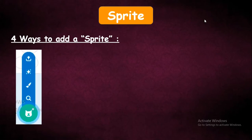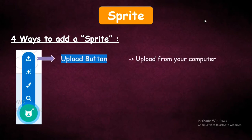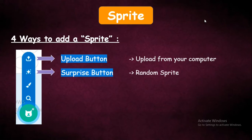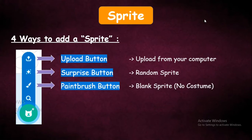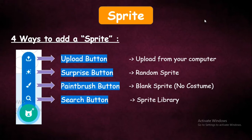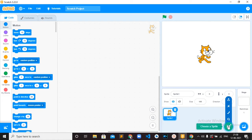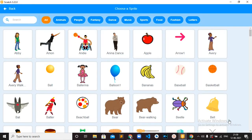There will be a bar, and in this bar you can find four options. Those are: Upload Button — you can upload a Sprite from your computer; Surprise Button — when you use this button, it will randomly give you a Sprite; Paintbrush Button — it will give you a blank Sprite without any costume; and the Search Button — using this Search Button, you can choose any Sprite from the Sprite Library. You can click on this button or click on the Search Button.